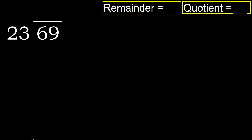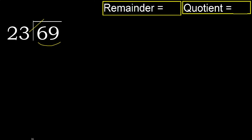69 divided by 23. 6 is less than 23, therefore move to the next digit. 69 is not less than 23, so with 69, 23 multiplied by which number is nearest to 69?